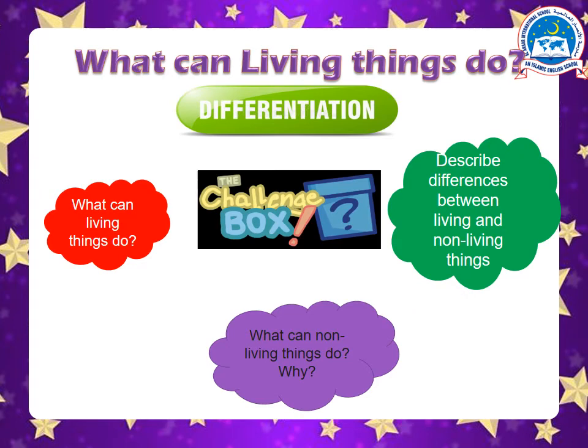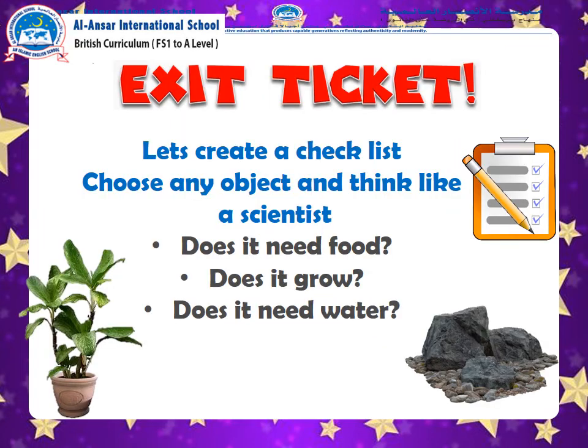Describe the difference between living and non-living things. Now you are going to tell the difference between the two things — living and non-living. Pause the video here and take your time to answer these questions. Then pick up anything around you and make a checklist. For example, here is a picture of a rock and a picture of a plant — which one needs food? Which one can grow? Which one needs water? Choose anything around you and make a checklist of your own.